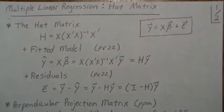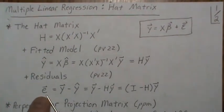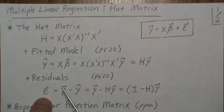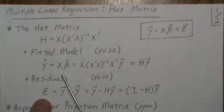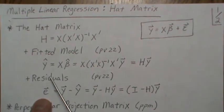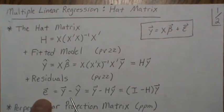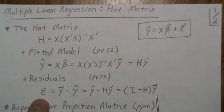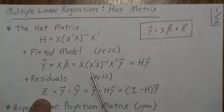We also learned that the residuals in matrix notation — the residuals come from the fitted model — y is equal to y hat plus e, so then we subtract over y hat. And we derive that in matrix notation it is i minus h times y, where h is the hat matrix.